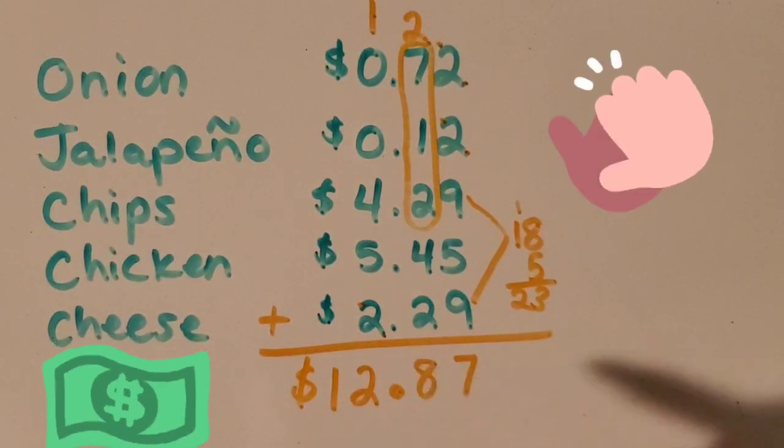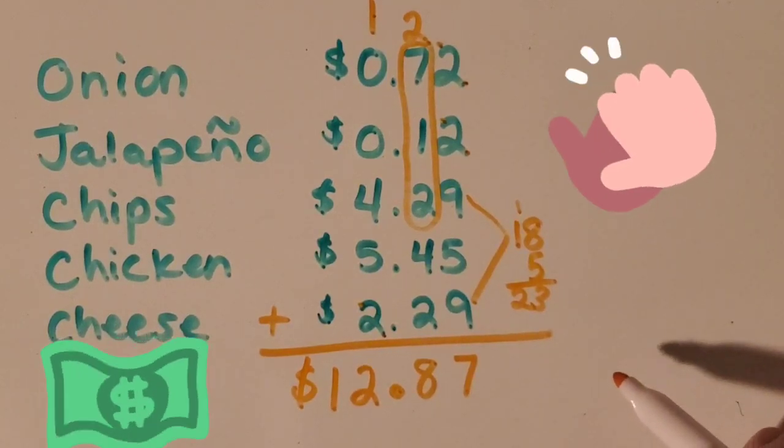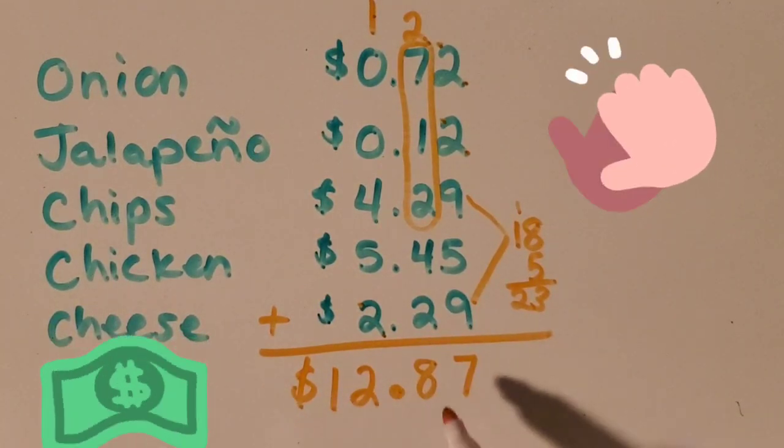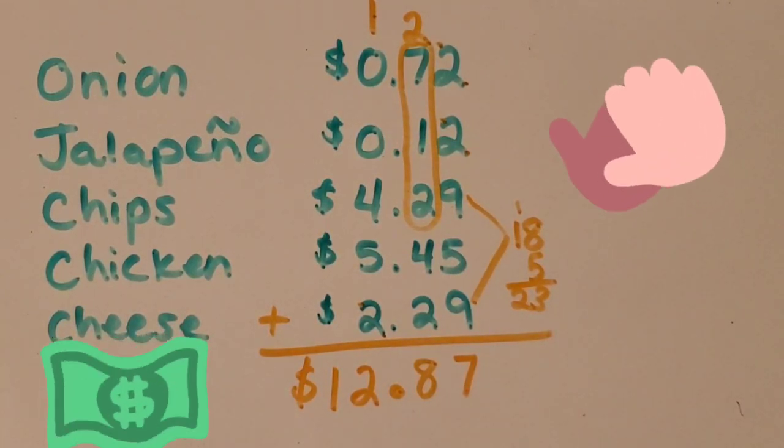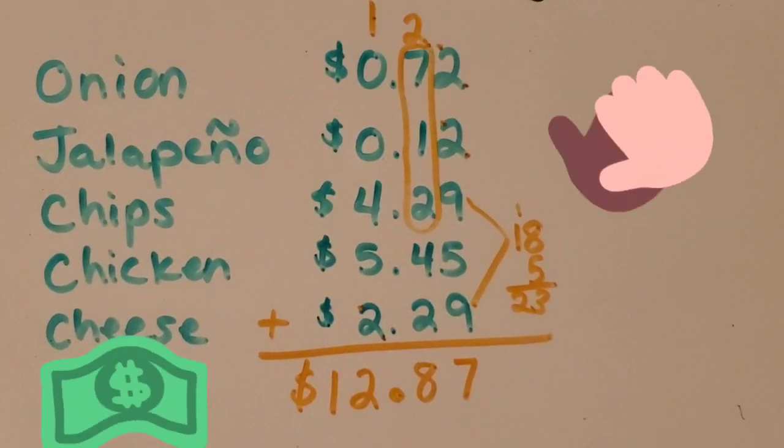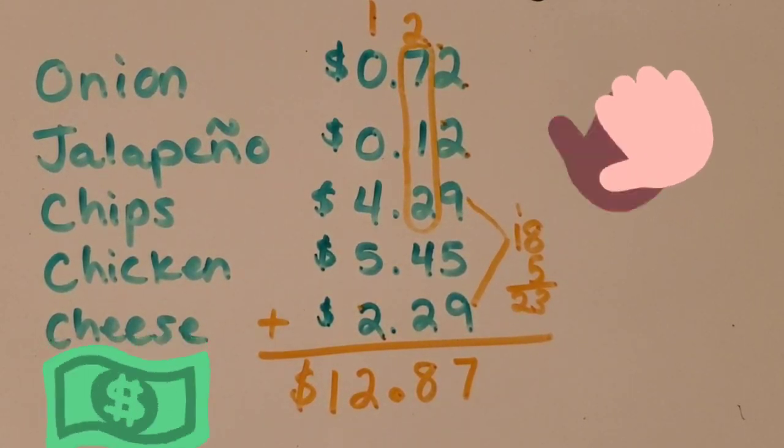Okay, so that was a pretty good deal. I got all my ingredients for the nachos for only $12.87. See you guys next week for subtraction.